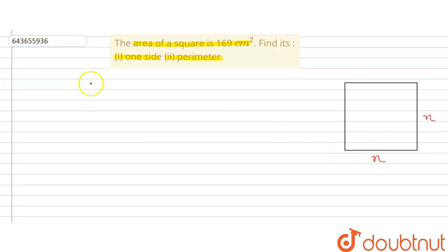What is given in the problem? The given thing is area is given. So area is equal to 169 centimeter square. This is given.